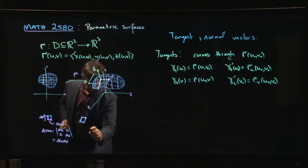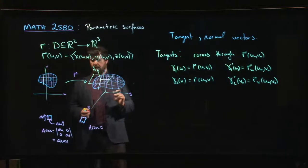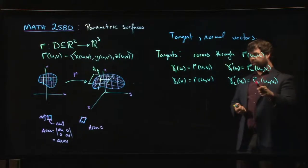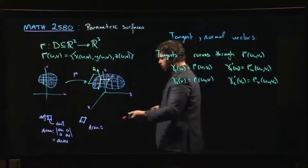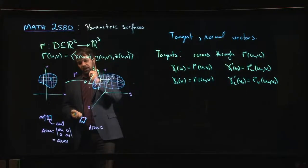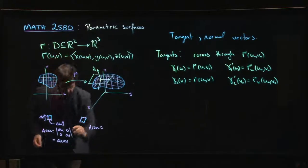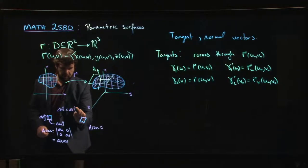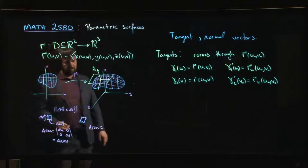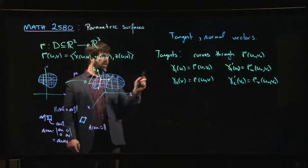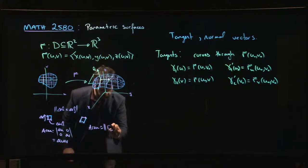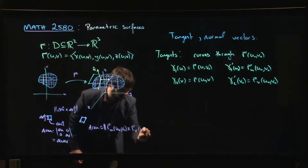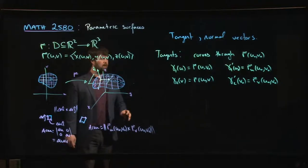We run into a small problem: these tangent vectors are in R3, so I can't put two three-dimensional vectors into a determinant — it's not a square matrix. Another way to compute the area of a parallelogram is via the cross product: the area is the magnitude of delta U times i crossed with delta V times j. So over here, the area of the patch is approximately the magnitude of R sub U at (U-naught, V-naught) crossed with R sub V at (U-naught, V-naught).